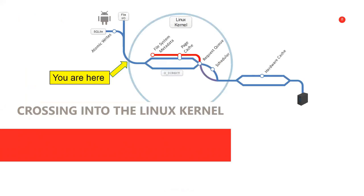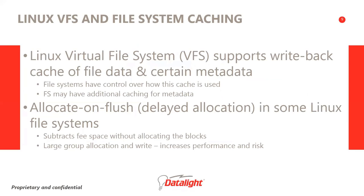The Linux virtual file system is set up to support write-back caching of file data and certain metadata. Each file system — ext4, UBIFS, etc. — has a great deal of control over how this caching gets used, and the file system often has its own metadata caching. Allocate on flush, also called delayed allocation, is implemented in some Linux file systems. This feature holds pending block writes and subtracts from free space without allocating blocks; when needed, the file system allocates large groups of blocks and commits all the data at once. This can help minimize fragmentation and increase performance, but it increases the risk of lost data due to power interruption or system failure.